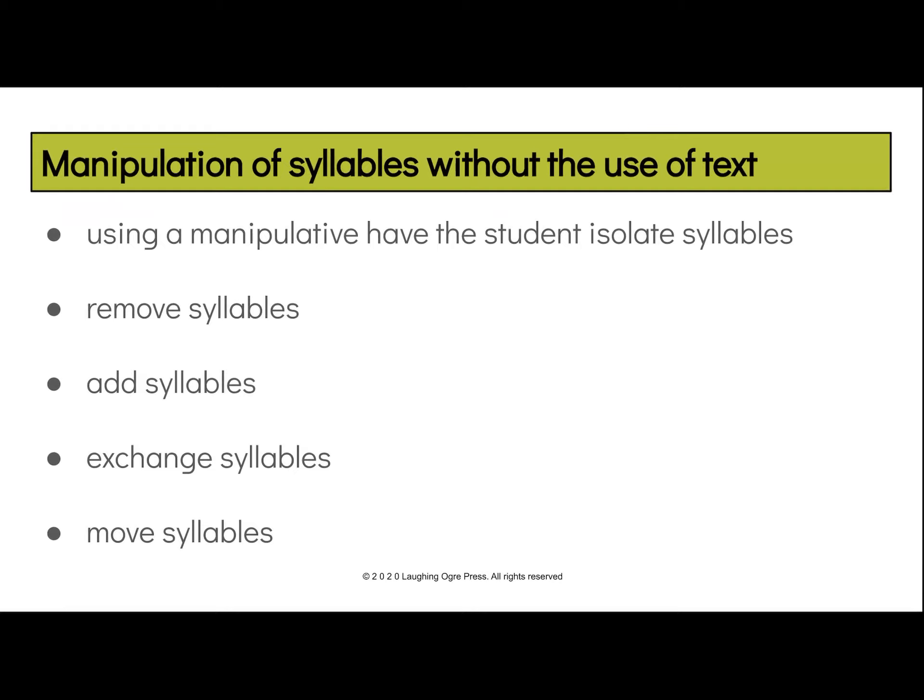Now we're going to see vowel-consonant-vowel with two closed syllables, dividing after the consonant. We can also see vowel-consonant-consonant-vowel with a closed syllable and an open syllable. And finally, vowel-consonant-vowel producing an open and a closed syllable.